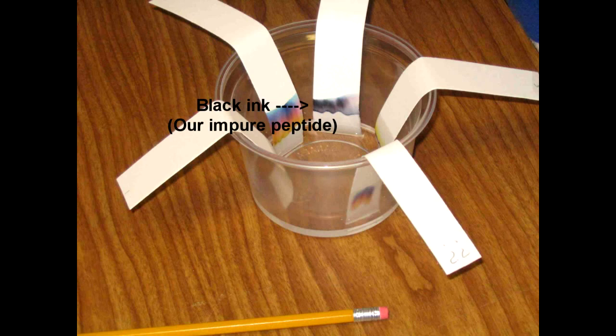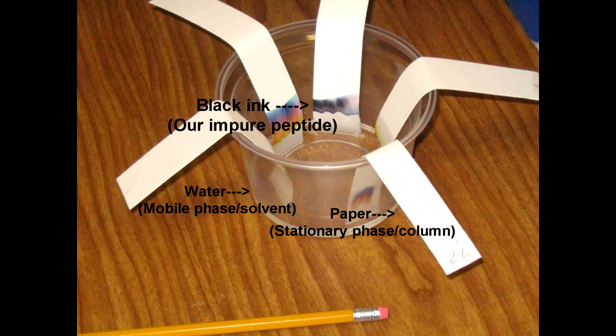The black ink in this case would be our sample, and the paper is the stationary phase, or our column, and the water is the mobile phase, which will assist in moving the sample through the column. On the HPLC, we must include a UV detector so we can discern the different components of our sample. This is similar to our eyes being able to see the different parts of the ink once it is separated.